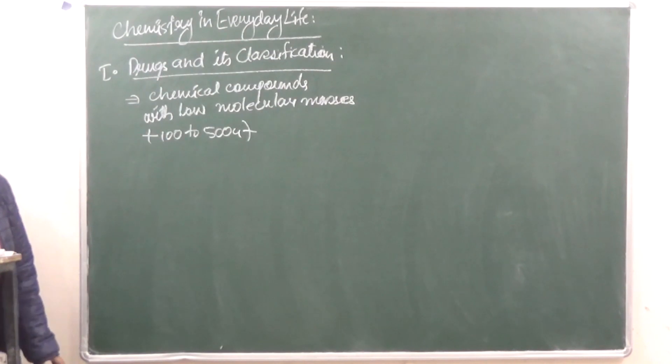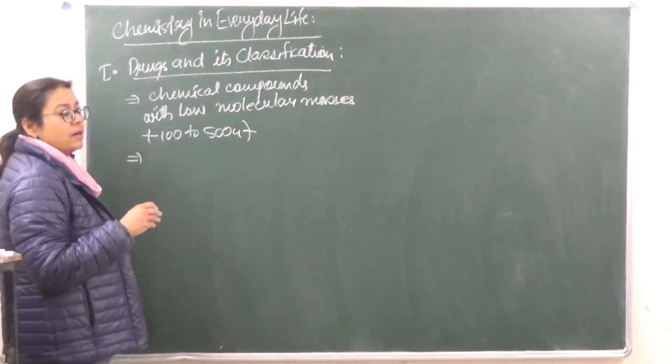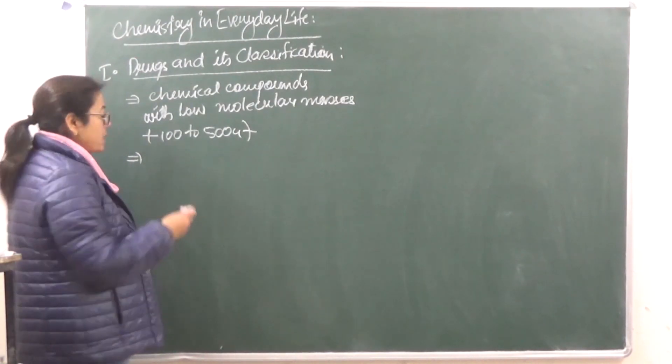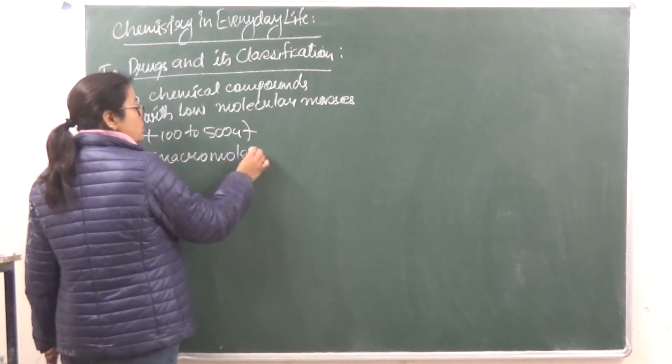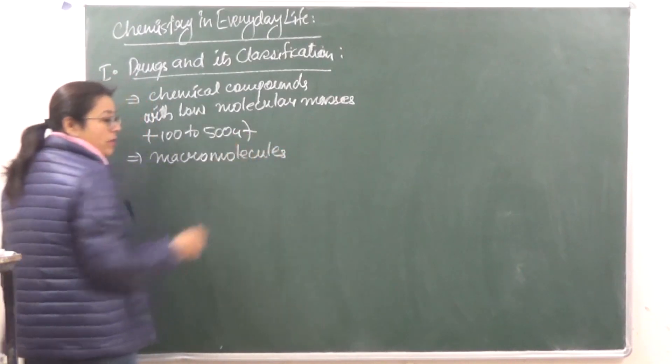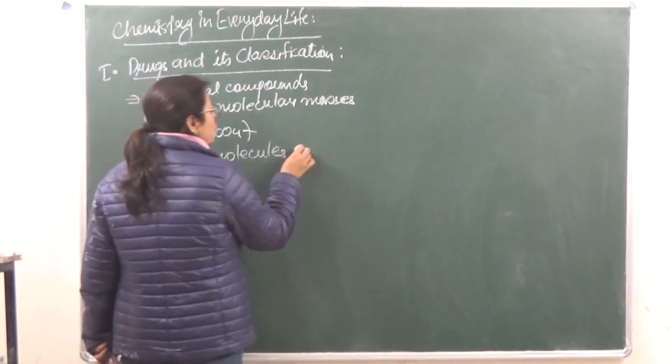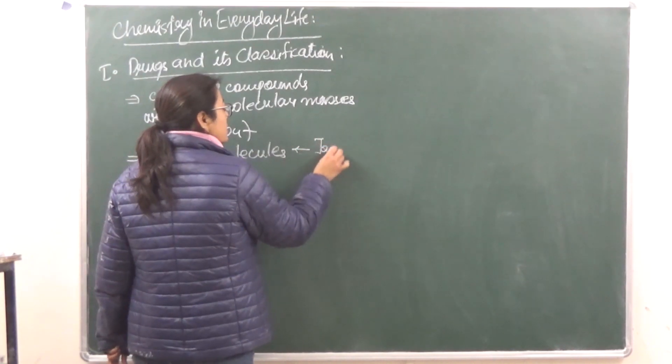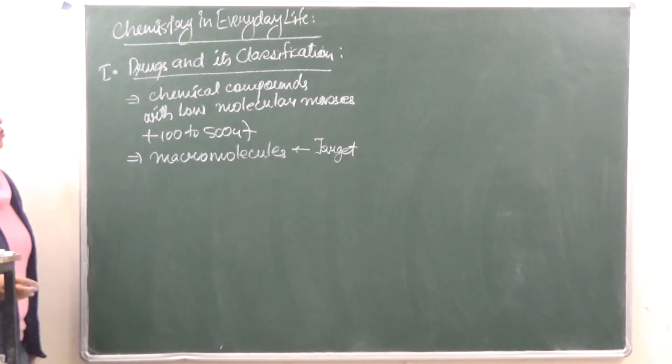Now what do these do in our body? Our body has molecules present with large masses, and they are known as macromolecules. So drugs' main target is they are going to target the macromolecules which are present inside our body. So macromolecules are going to be known as the target for the drugs for any biological process which is going to take place inside the body.